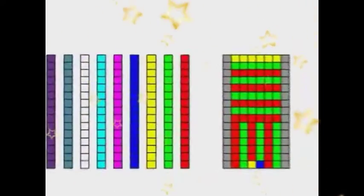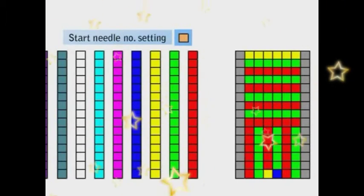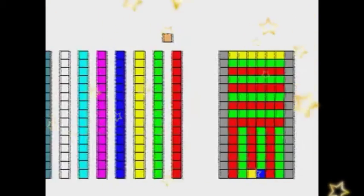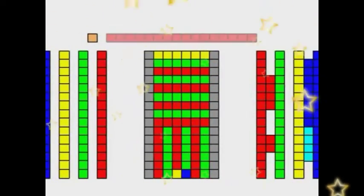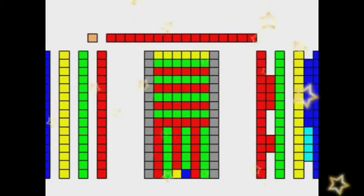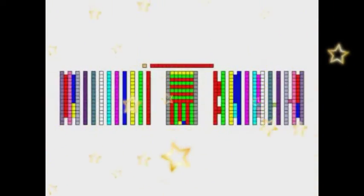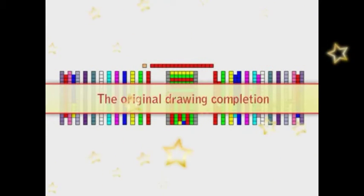Once the specifications of option lines are completed, set the start needle number. Set which needle counting from the left edge you want to start. Specify the pattern range. Now the original drawing is completed.